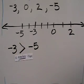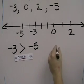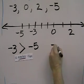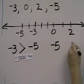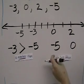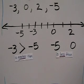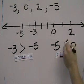So we would use this symbol, negative 3 is greater than negative 5. If I wanted to say how does negative 5 and 0 compare, I would say negative 5 is less than 0 and the symbol would look like this.